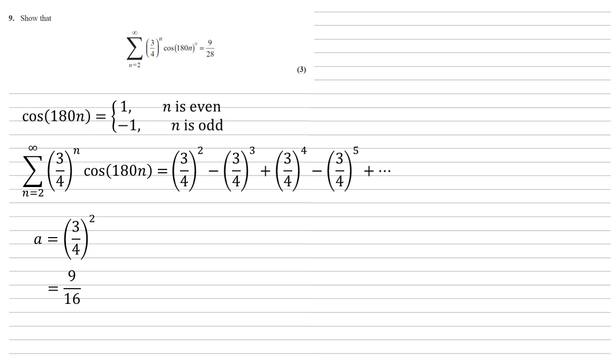As our power is going up by one each time and we're going from positive to negative and vice versa, our common ratio is negative three quarters. The three quarters brings the power up by one, the negative switches the sign.